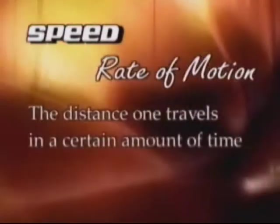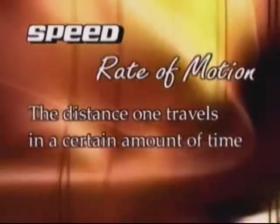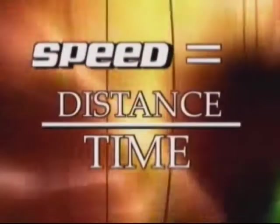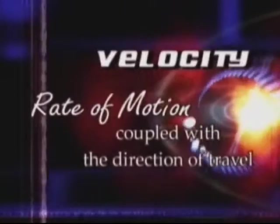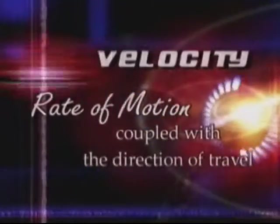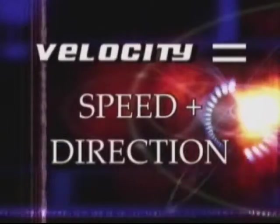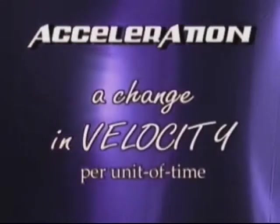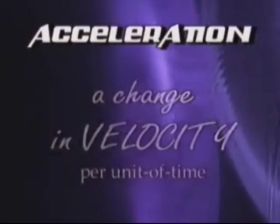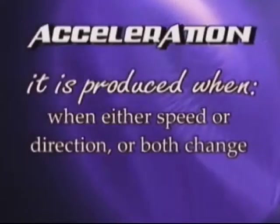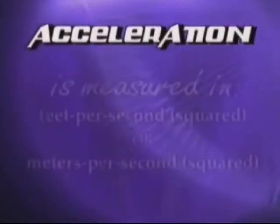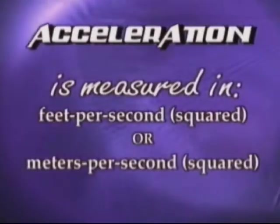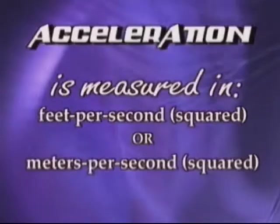Speed is defined as the rate of motion — the distance one travels in a certain amount of time. Speed equals distance over time. Velocity is defined as the rate of motion coupled with the direction of travel; velocity equals speed and direction. Acceleration is defined as a change in velocity per unit of time. It is produced when either speed or direction or both change, and is measured in feet per second squared or meters per second squared.